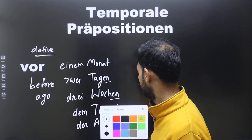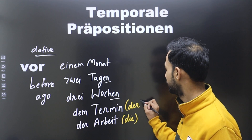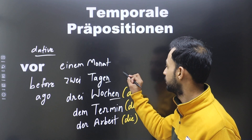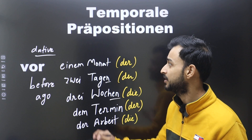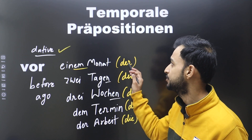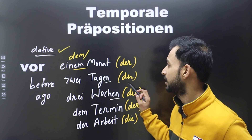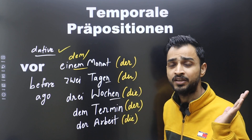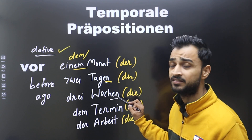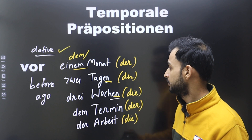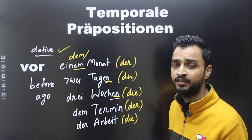For dative with 'vor,' the articles change: 'die' changes to 'der,' 'der' and 'das' change to 'dem.' So 'der Monat' becomes 'einem Monat' (indefinite dative), 'der Termin' becomes 'dem Termin.' For plural, the noun takes an extra 'n': 'zwei Tagen' — 'Tag' gets extra 'n.' 'Wochen' already ends in 'n,' so no extra 'n' needed.